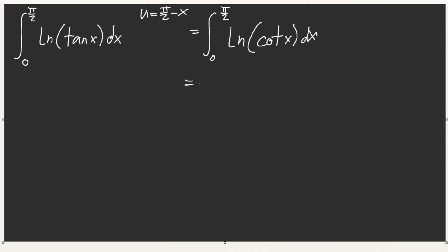Wait a minute, but then this is equal to negative natural log of tangent x. So what we have here is I equal to negative I. What does it mean when we have I equal to negative I? It means that the integral is zero. When I is equal to negative I, the integral is equal to zero.